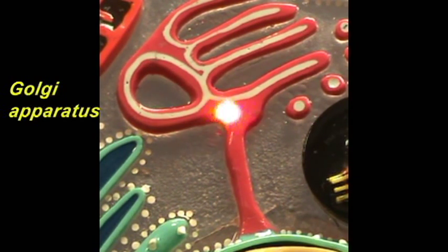Another inaccuracy here is the fact that the Golgi apparatus is represented as being attached to the nuclear envelope by this stalk, and that is not the case. The Golgi apparatus is not directly connected to the nuclear envelope.